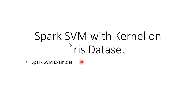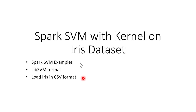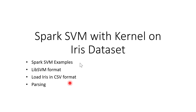In this video I'm going to talk about Spark SVM examples — that's the first thing you need to get the system working. Then I'll briefly talk about the LibSVM format, which is the labeled point format used in most Spark machine learning libraries. Then I'll talk about how to load the iris dataset in CSV format. Iris only contains 150 records. Then I'll talk about parsing the data into labeled point format before we can call Spark SVM.